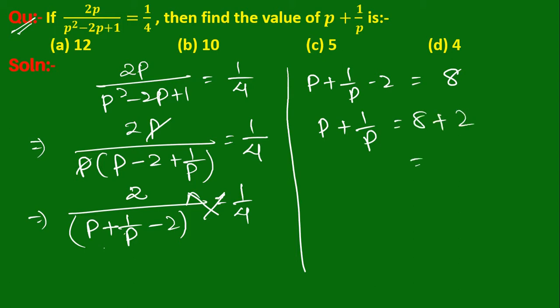Therefore p plus 1 upon p equals 10. So option B is the correct answer.